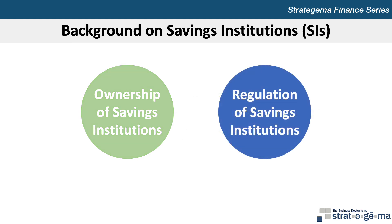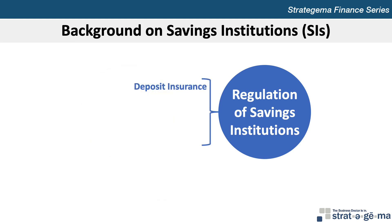The regulatory structure for savings institutions, established by the Financial Reform or Dodd-Frank Act of 2010, involves some overlap among the regulators. The Financial Reform Act removed some of the previous advantages of SIs, and as a result, some SIs have attempted to become commercial banks or credit unions. Deposit insurance for SIs is provided by the Deposit Insurance Fund, or DIF, administered by the FDIC, which charges SIs annual insurance premiums. If an SI fails, the FDIC uses funds from the DIF to reimburse depositors.